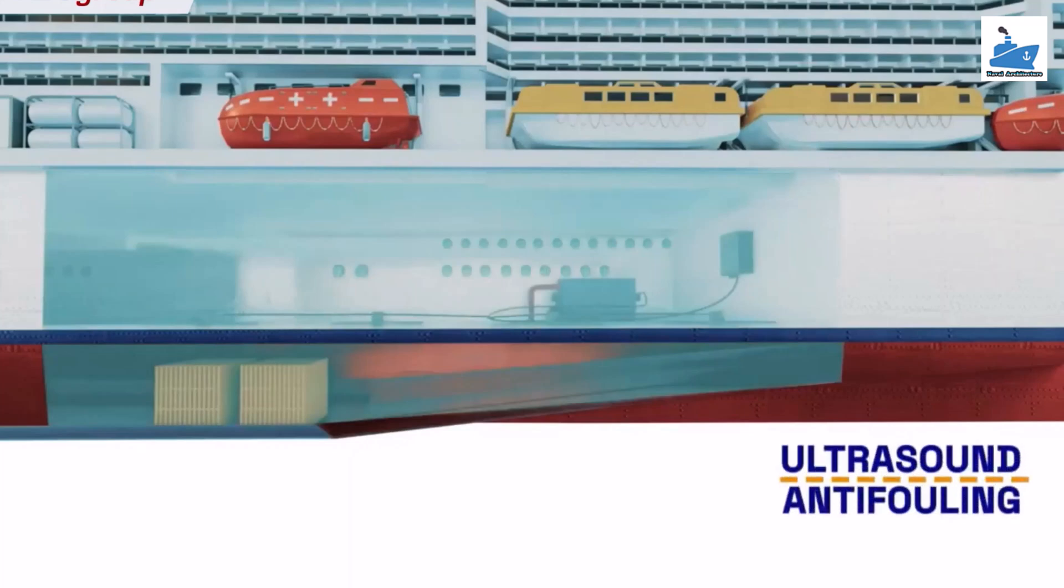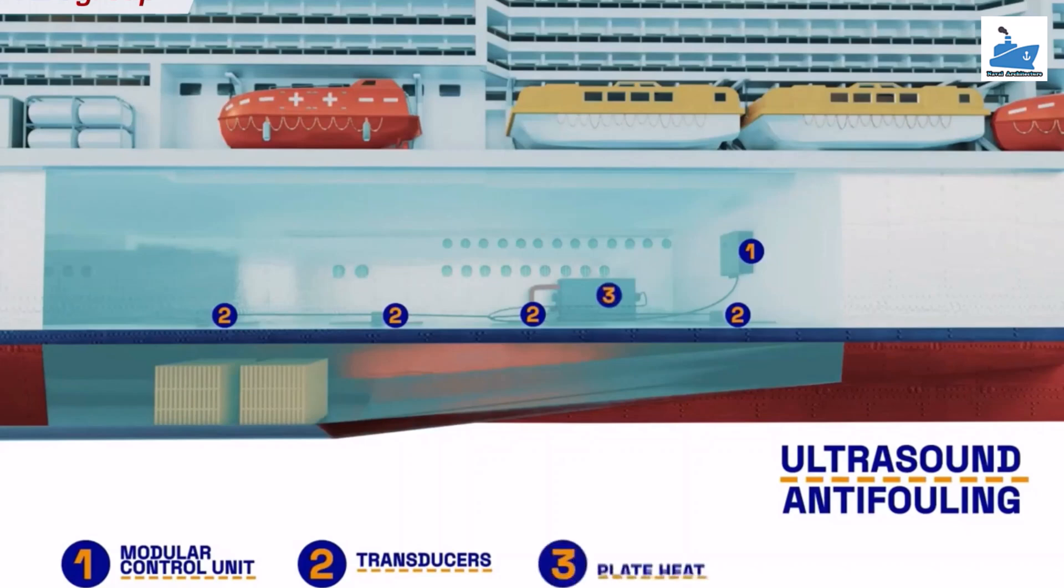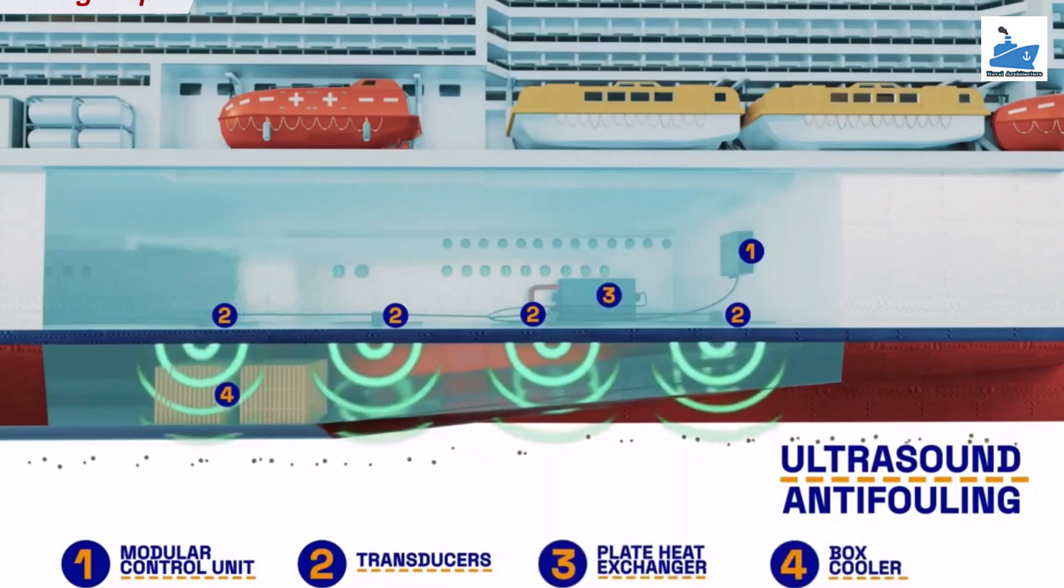In the ultrasonic method, a wave generator produces and sends electrical impulses at high frequency. These waves are passed through a coaxial cable to transducers which are mounted externally to the sea chests, strainers, or box cooler.